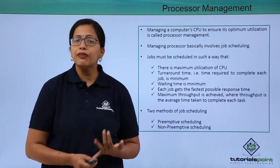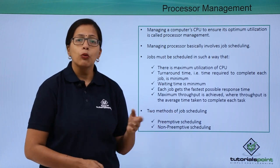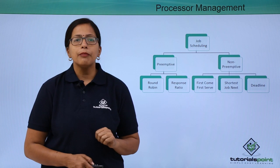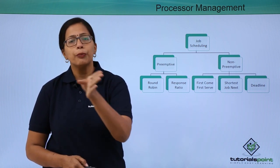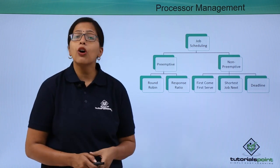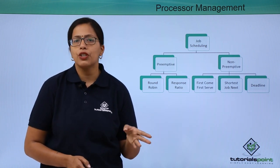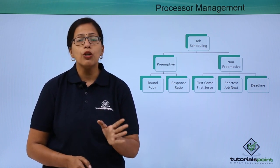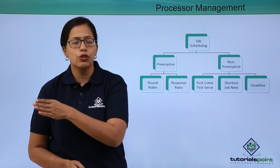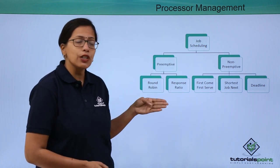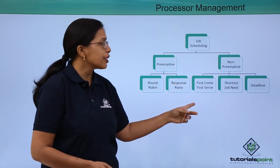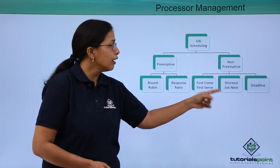Job scheduling is done in two ways: pre-emptive and non-pre-emptive. In pre-emptive scheduling, the operating system can move on to the next job before the previous job is done. In non-pre-emptive scheduling, the operating system has to wait till the current job is finished before deciding on the next job. Pre-emptive scheduling methods include Round Robin and response ratio. Non-pre-emptive methods include first come first serve, shortest job next, and deadline.